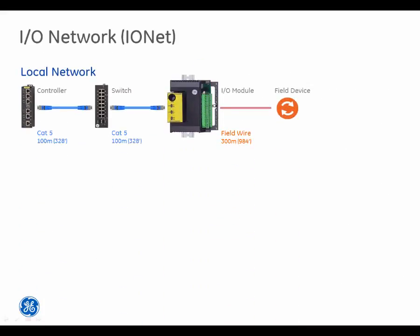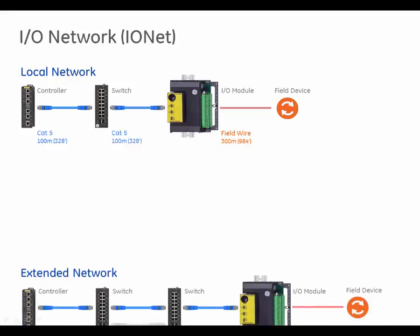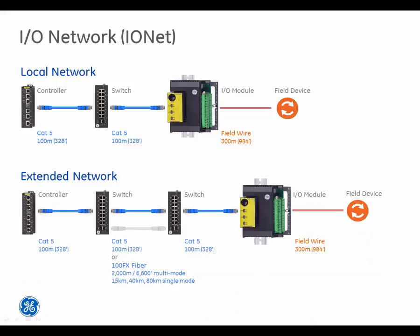The I/O network, or I/O net, utilizes a dedicated full duplex point-to-point protocol. It supports a deterministic 100 megabit communications network suitable for local and distributed I/O modules. In each communication frame, the online controllers read data from the input modules, write data to the output modules, and synchronize variables between controllers in a dual or TMR configuration.